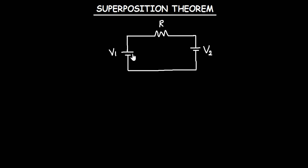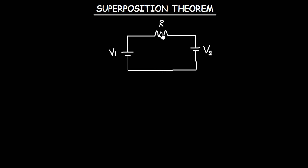So that means first of all, if you are going to consider the first voltage source acting alone, then you calculate for the current or the voltage drop across this resistor. Then after that, you consider the second voltage source acting alone, then you calculate for the current or the voltage drop across this resistor.